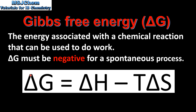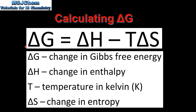To calculate delta G for a reaction under non-standard conditions we can use this equation. In this equation delta G is the change in Gibbs free energy, delta H is the change in enthalpy, T is the temperature in Kelvin, and delta S is the change in entropy.